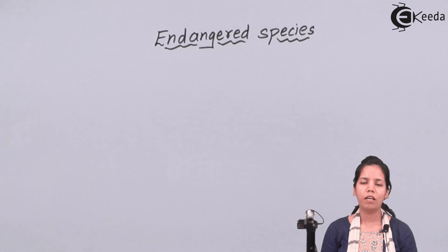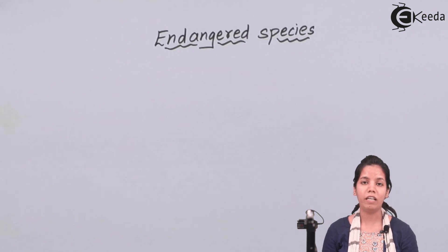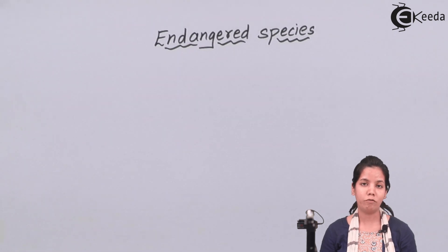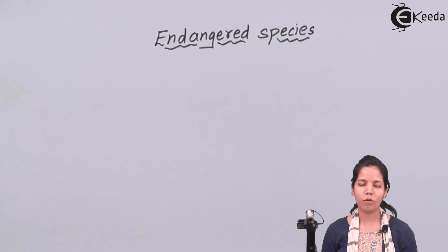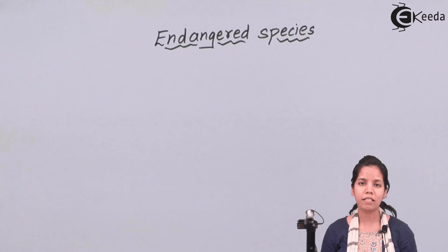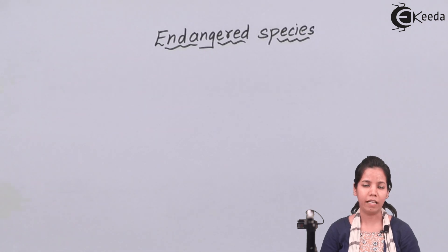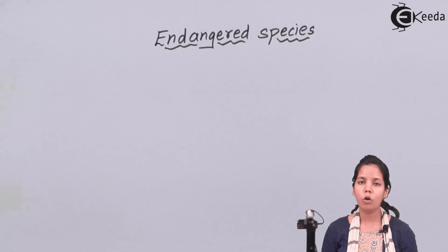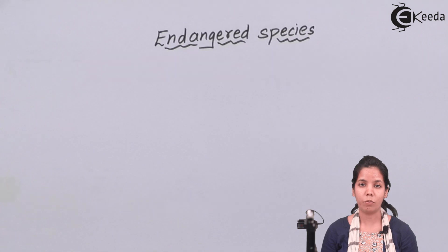Endangered species — we have all been studying right from our lower classes till now that we need to conserve the species, the natural flora and fauna of this earth. There are certain organisms or animals which are endangered. When I say endangered, it means the population is very, very less on earth, and if we don't take care of those, slowly and steadily those organisms will become extinguished and won't be present on earth.